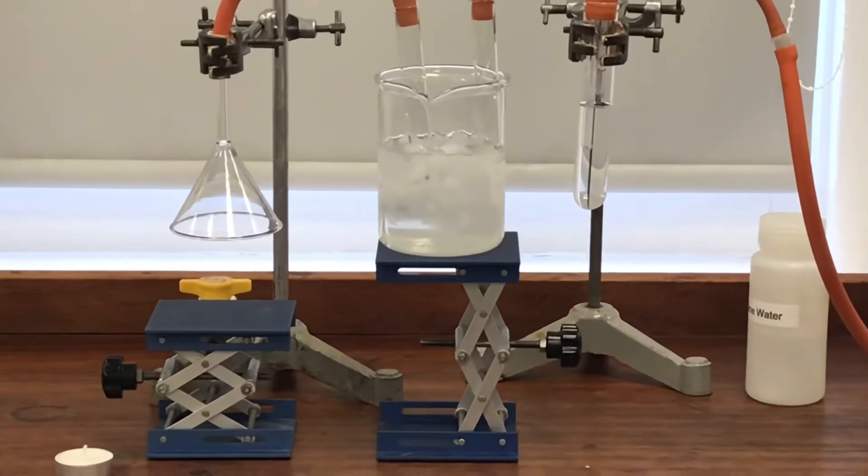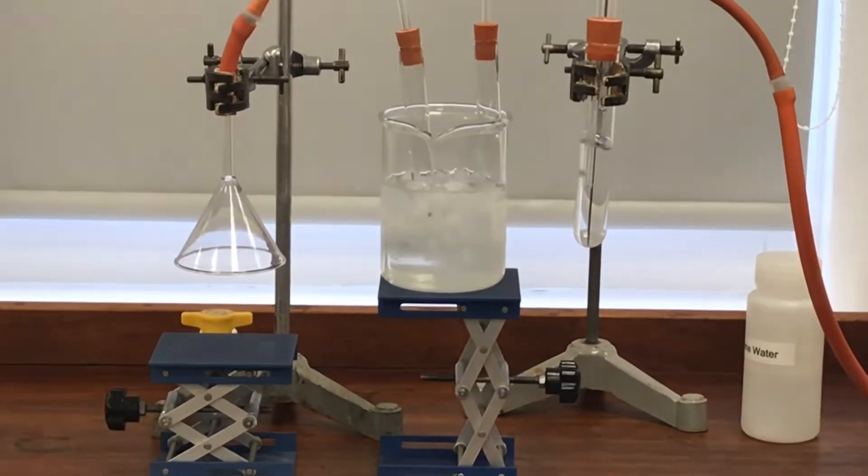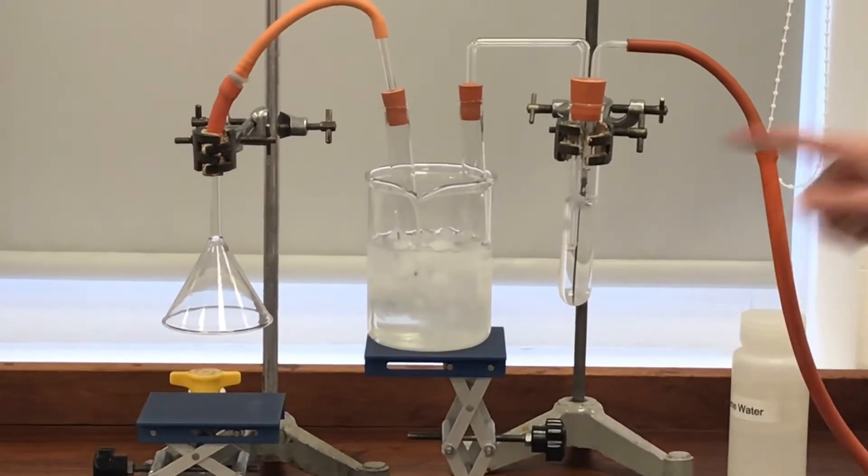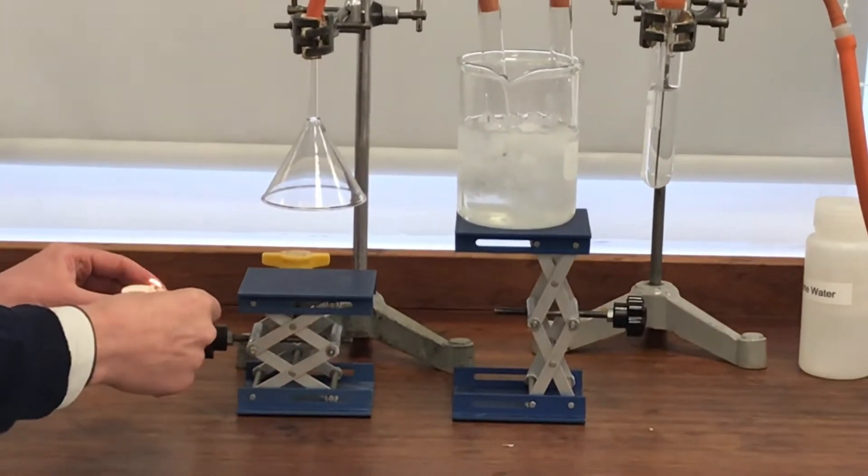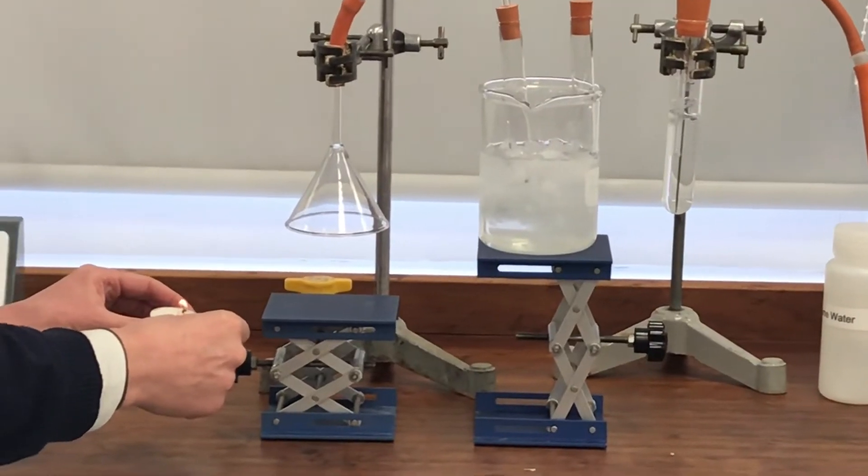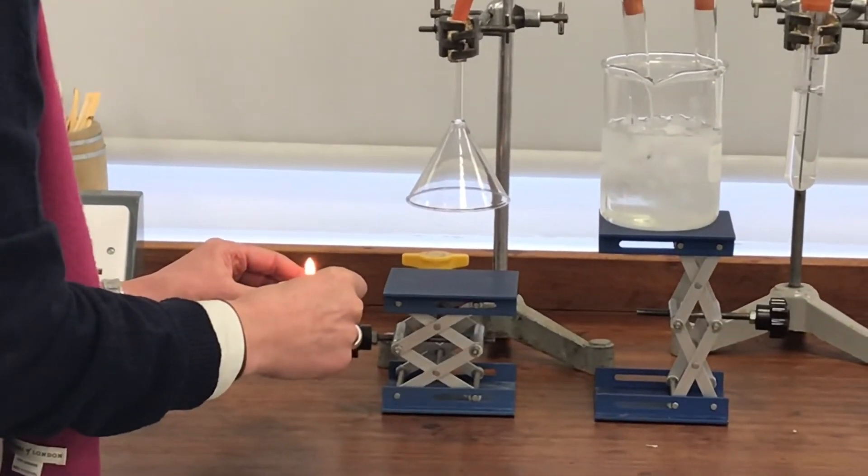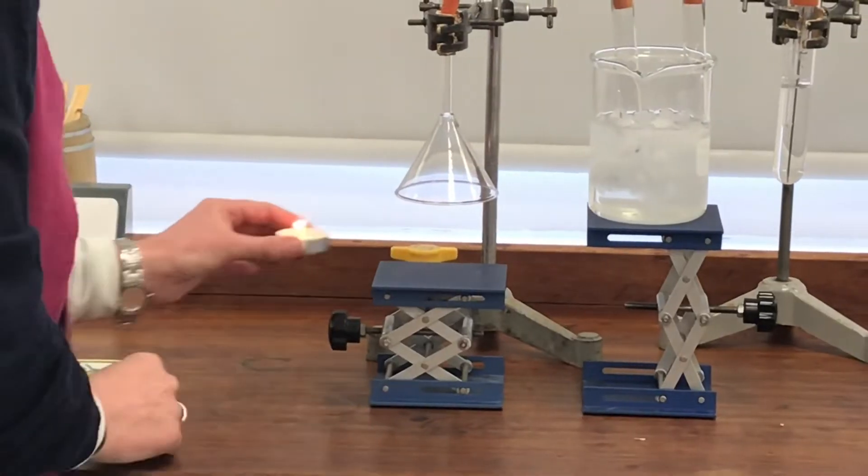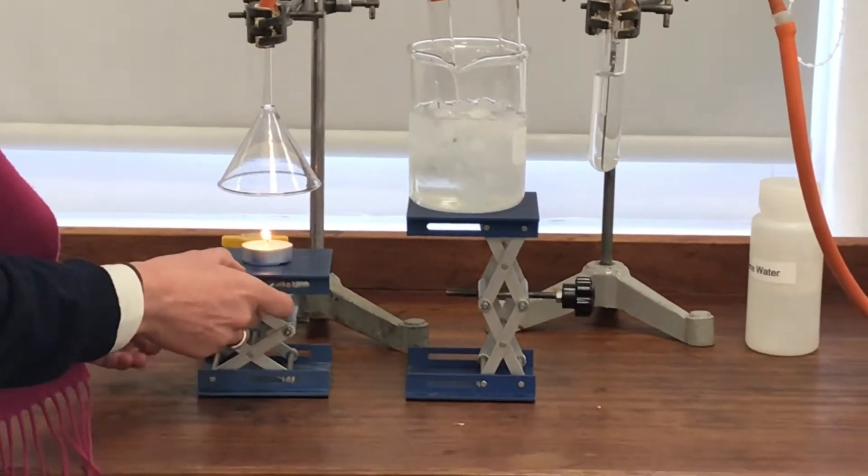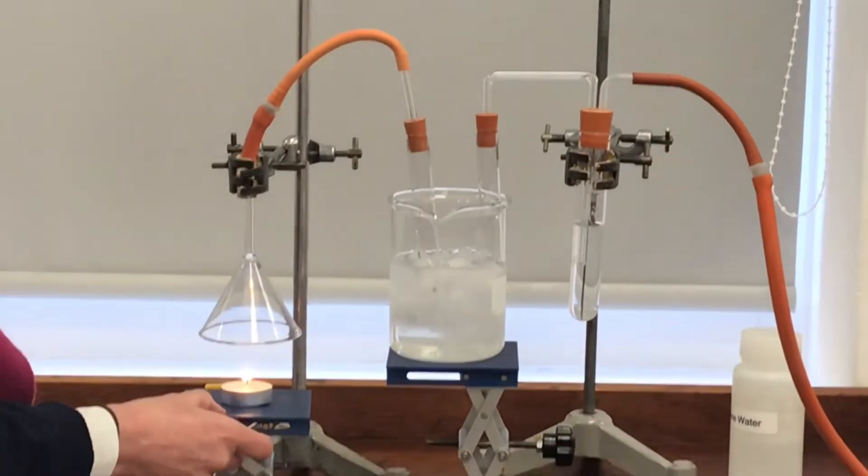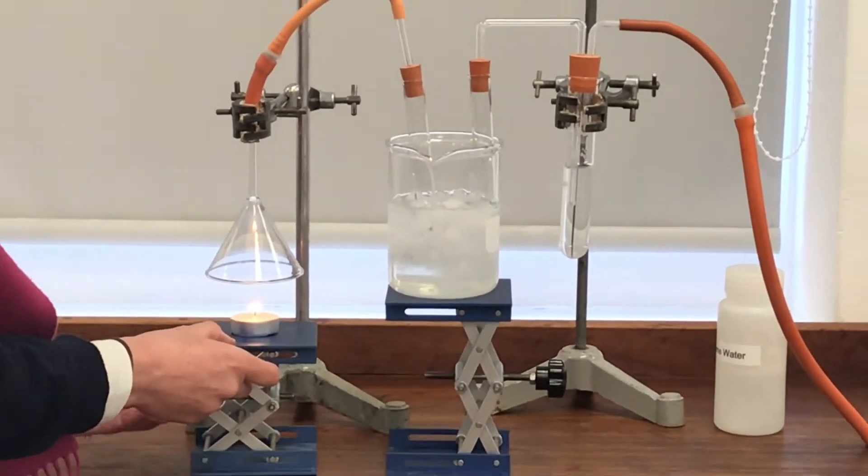I'm going to turn the suction pump on. You can see it's already sucking products through. At the moment there's nothing really other than just air going through. So I set light to my candle. I'll pop it underneath and then any products that the candle makes while it's burning will get sucked through this whole system.